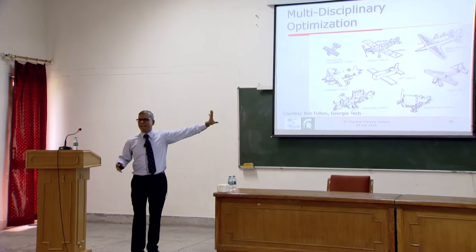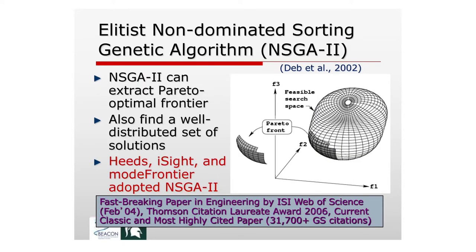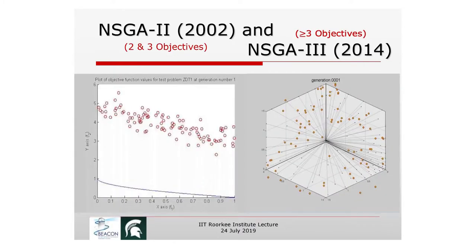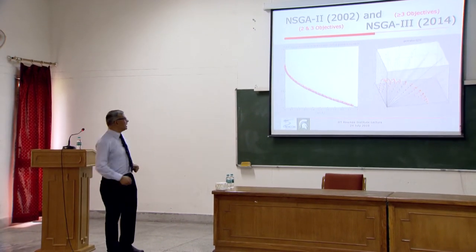I wrote a book in 2001 covering multi-objective optimization concepts and how evolutionary methods address them. The idea is: solve the problem, find a representative Pareto-optimal set, and then present it to decision makers to choose one. NSGA-2 works in this way — starting from random solutions, it converges toward the Pareto front. When minimizing two objectives, the algorithm gives you a good representative set of about 100 different Pareto-optimal solutions.